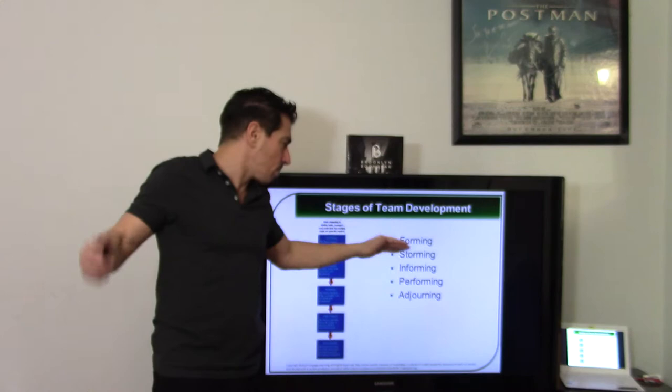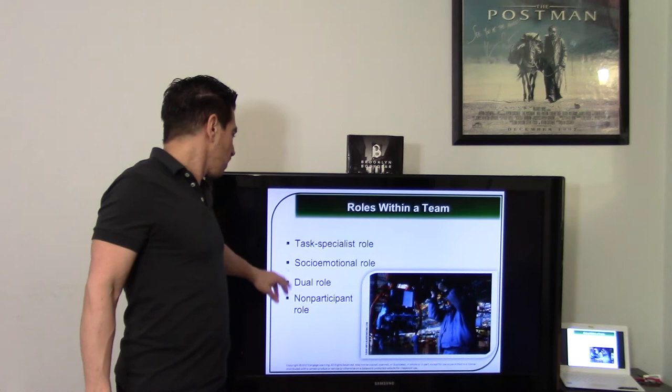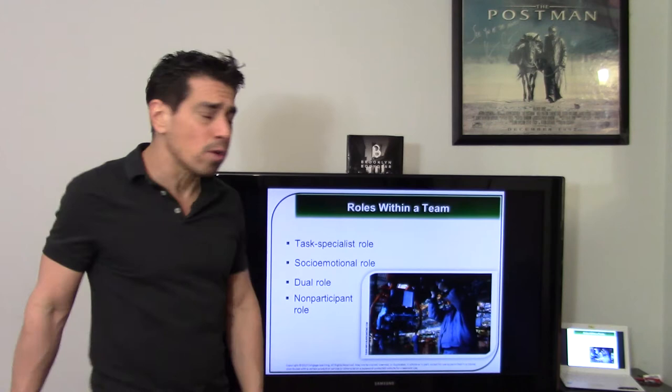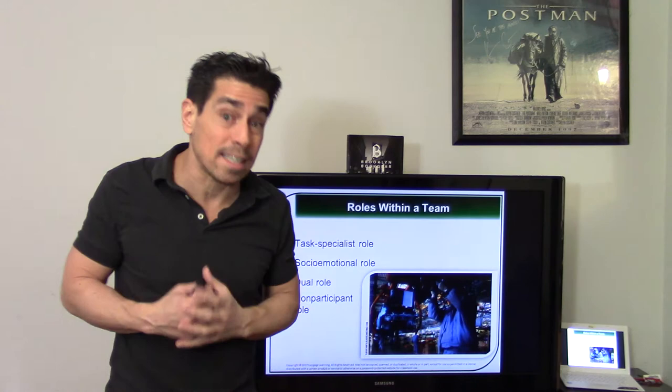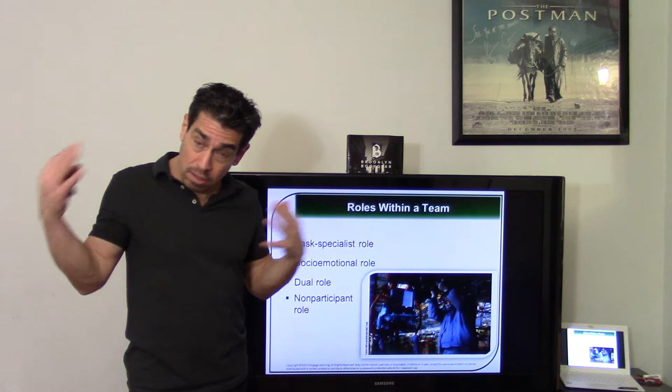Role within your team. Task specialist. Socio-emotional. Non-participant. Or dual role. Task. Either you have a task activity or a maintenance activity. Task or maintenance. Socio-emotional. Task. You're doing the job or the maintenance activity. You're the supervisor or you're helping people to get together. Get together. Make everything happen. Or you might have both jobs. Task and motivation. Or you might be a non-participant. You don't do anything. You hang out.